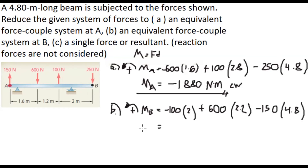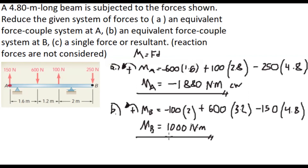Our moment at point B — correction: 2 plus 1.2 is 3.2, so that gives 1000 Nm. Since the result is positive, our assumption is correct, meaning the moment at B is counterclockwise. To summarize: the moment at point A is 1880 Nm clockwise, and the moment at point B is 1000 Nm counterclockwise.